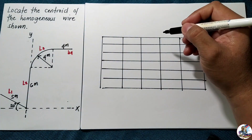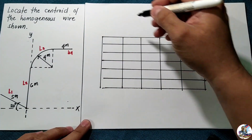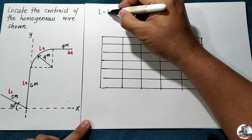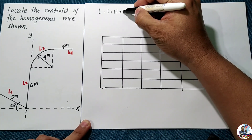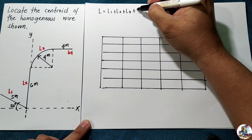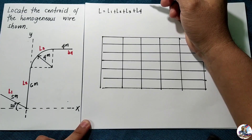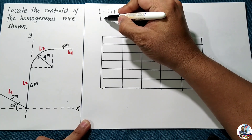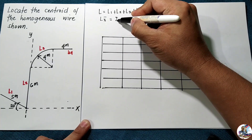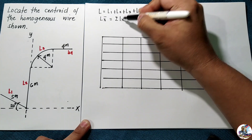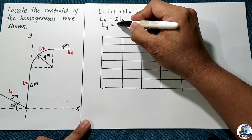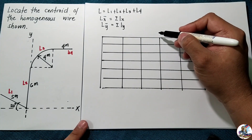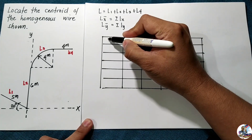We recall the formula for the centroid of a line. The total length equals L1 plus L2 plus L3 plus L4. The centroid formulas are: L·x̄ equals summation of L·x, and L·ȳ equals summation of L·y. Let us tabulate all the data — starting with the length of each line.